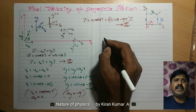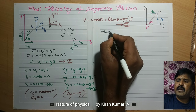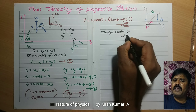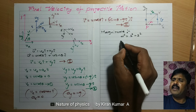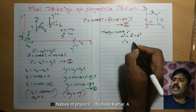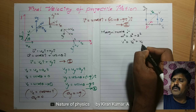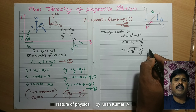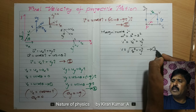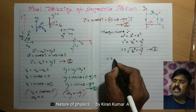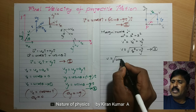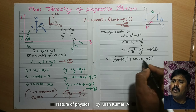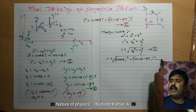Next, writing magnitude and direction. First, magnitude. This is a two-dimensional vector. Diagonal squared is equal to side squared plus side squared — the diagonal represents the final velocity V. So V squared equals Vx squared plus Vy squared. Therefore V is equal to root over Vx squared plus Vy squared, written as equation number 3. Substituting the values: V equals root over (U cos theta) squared plus (U sin theta minus G·T) squared. This is equation number 4.